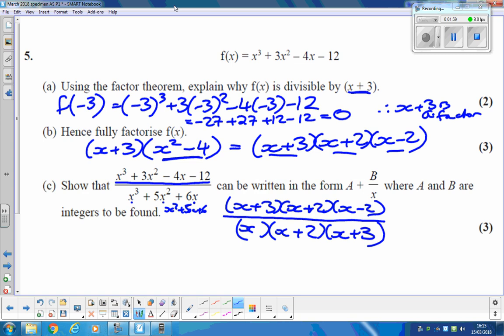That means loads of things cancel. The x plus 3 on the top with the x plus 3 on the bottom. The x plus 2 on the top with the x plus 2 on the bottom. Leaving us with x, take away 2, over x.